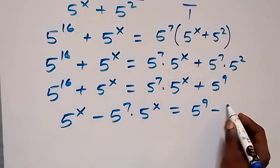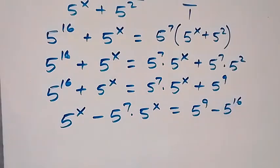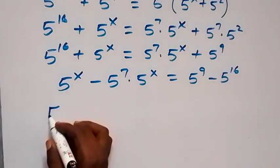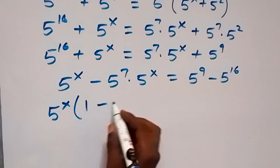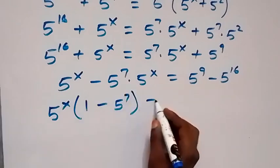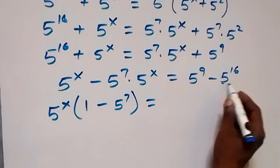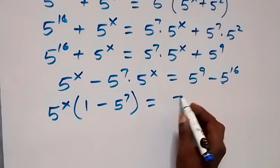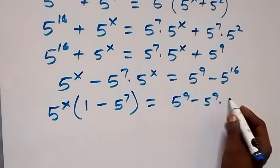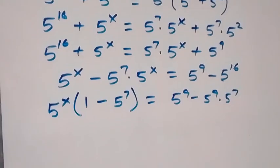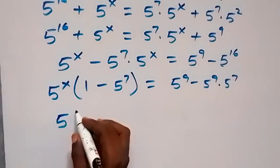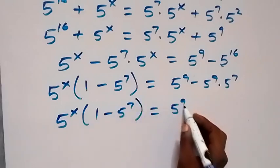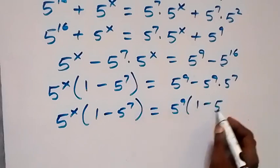On the left, 5 raised to power x is common, so we factor it out: 5 raised to power x times the bracket 1 minus 5 raised to power 7. On the right, we factor out 5 raised to power 9, noting that 9 plus 7 equals 16, giving us 5 raised to power 9 times the bracket 1 minus 5 raised to power 7. So 5 raised to power x times (1 minus 5 raised to power 7) equals 5 raised to power 9 times (1 minus 5 raised to power 7).